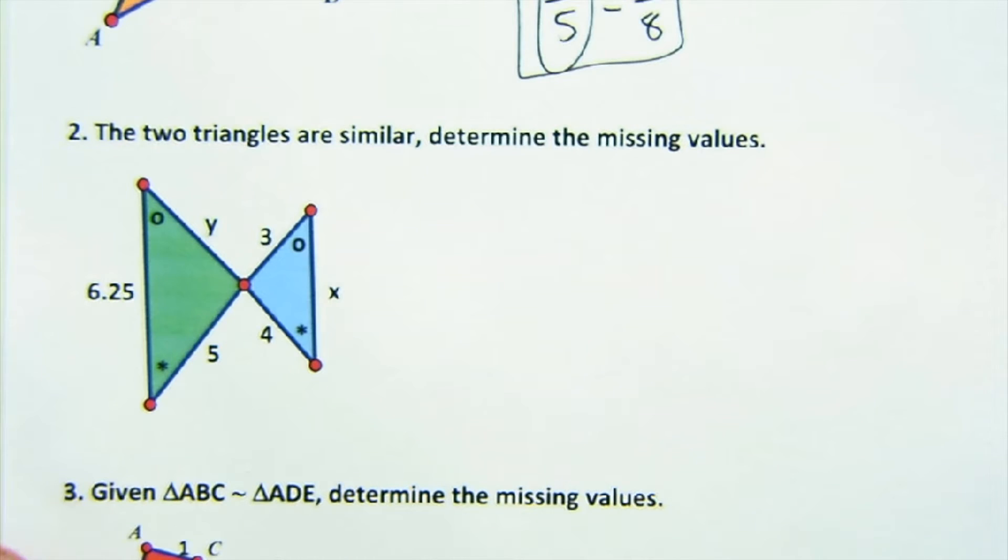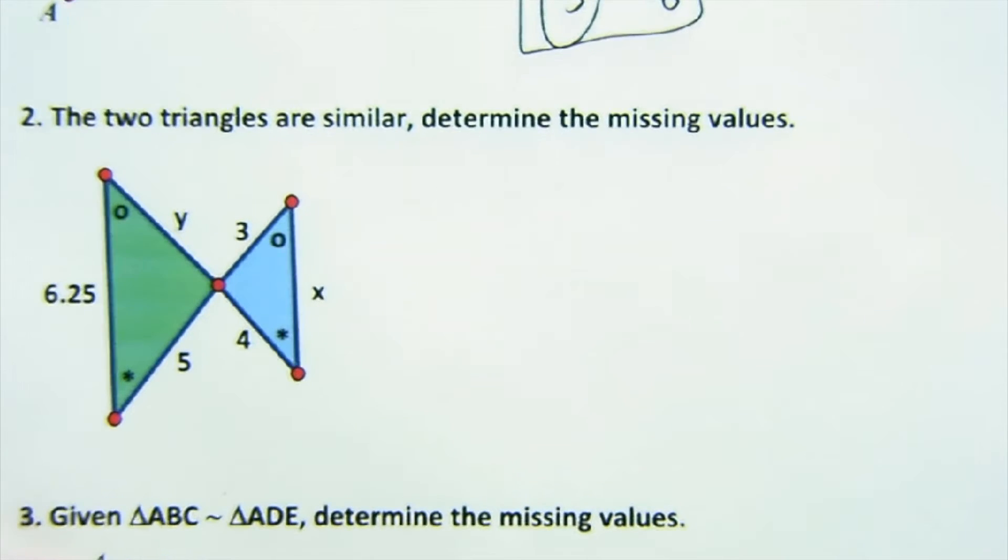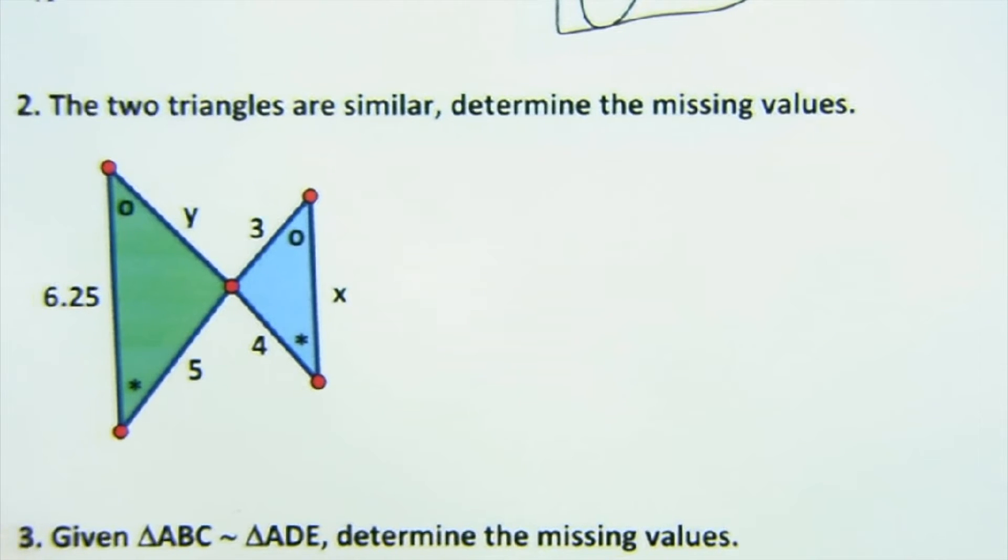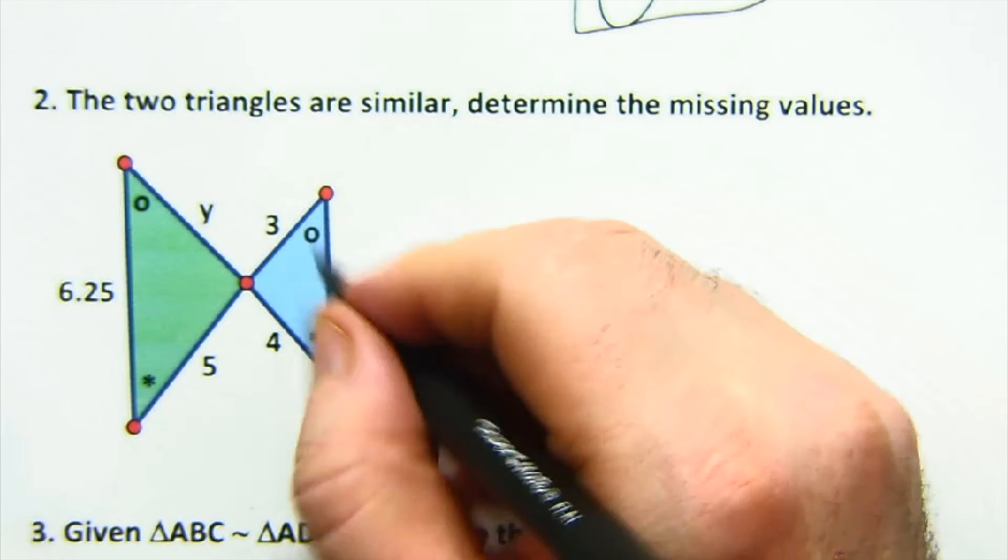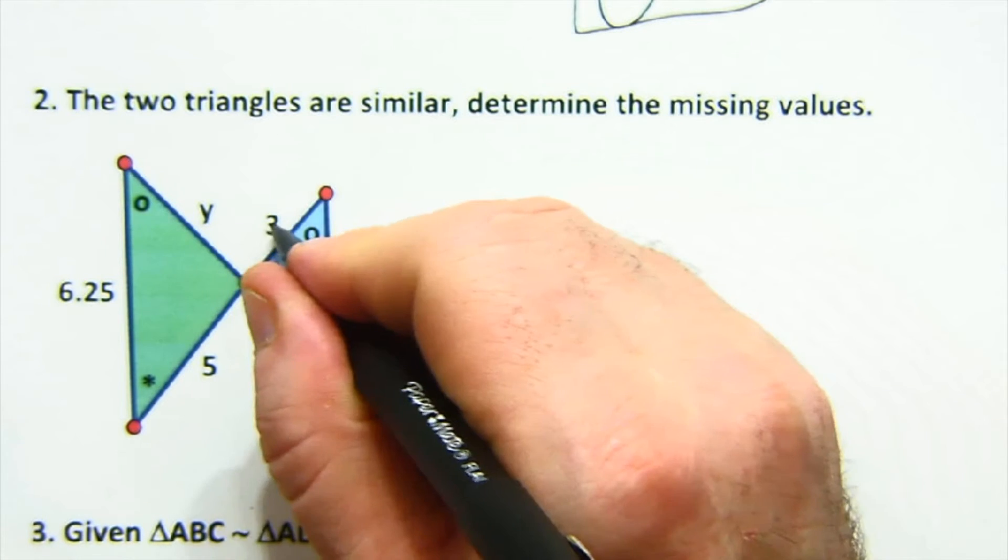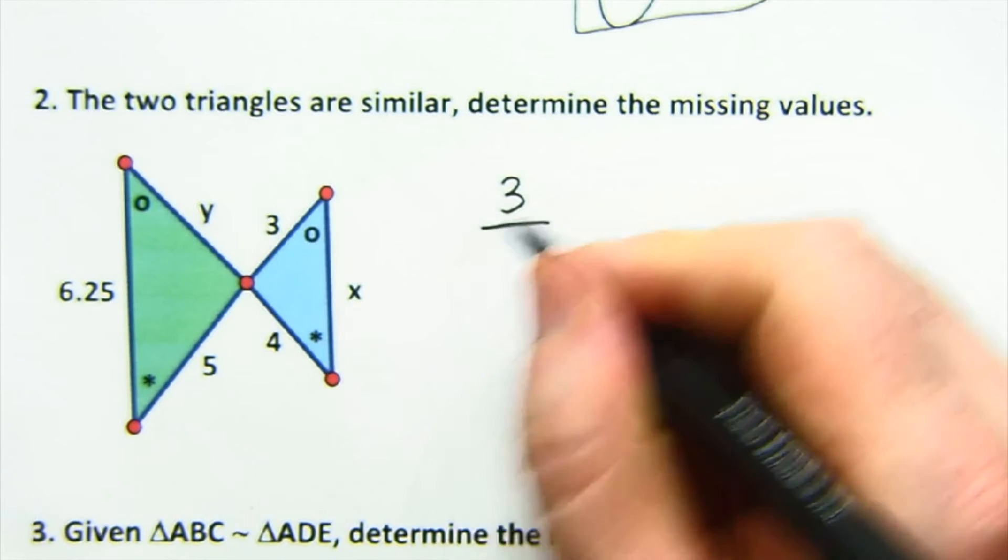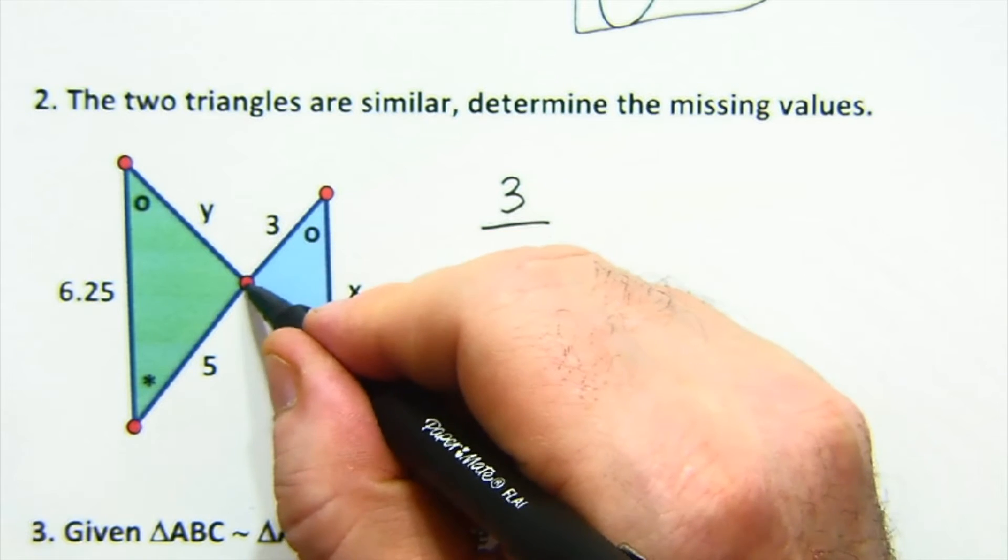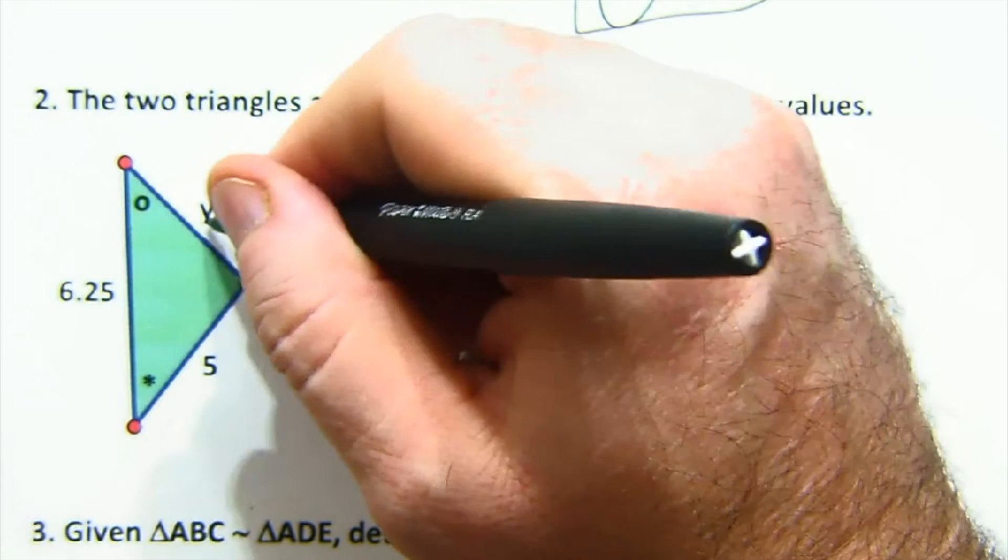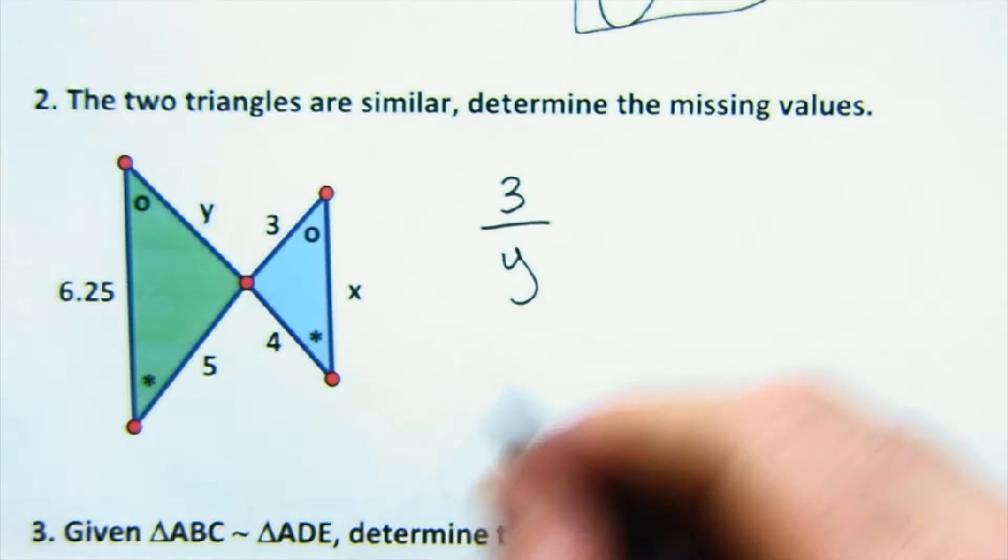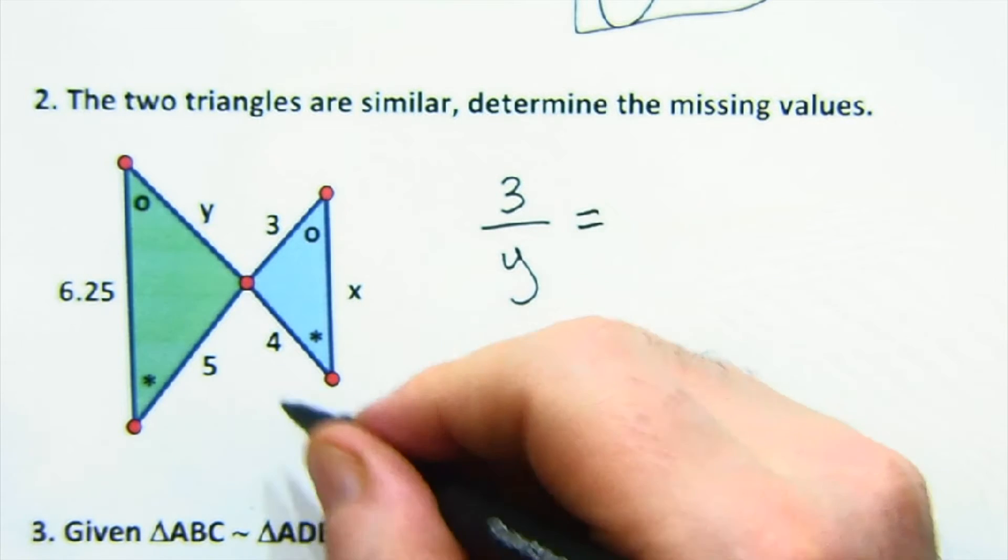Here's another situation. Again, it says these are similar. It doesn't give us a similarity statement, but this time it gives us some angles. So watch carefully here. I'm going to use the three right here just because it's the first thing I saw. Now it's between the vertical angle and the dot. So the vertical angle and the dot actually is the y in this case.